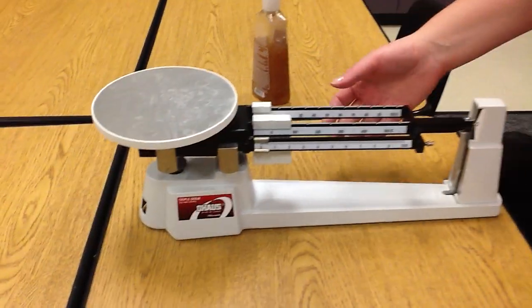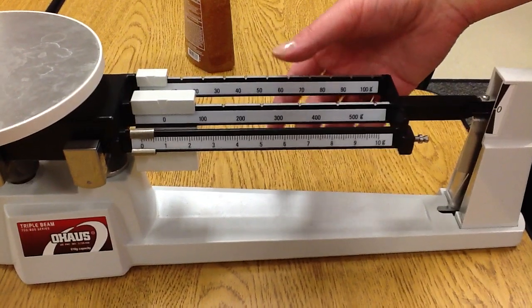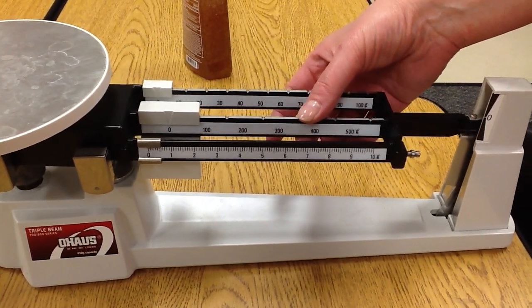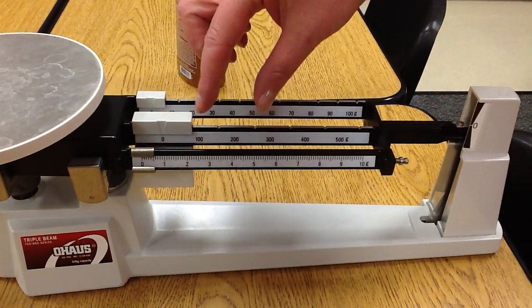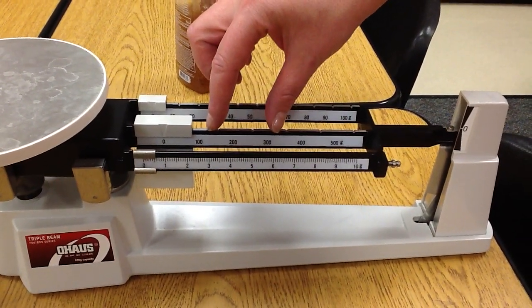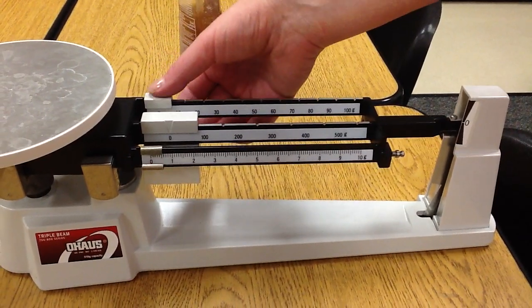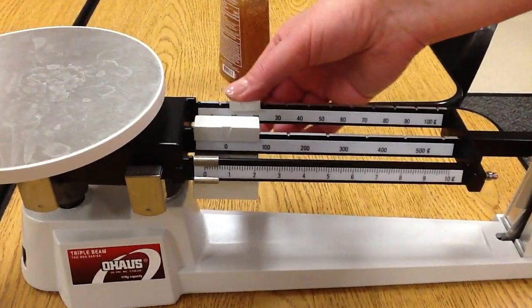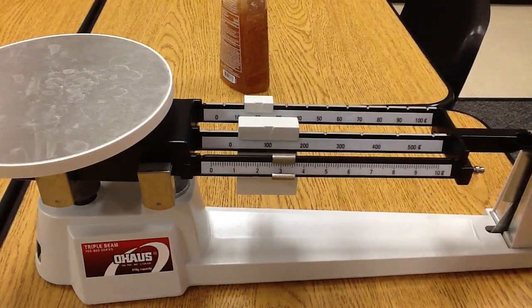The next part we have, which is very important, we have our three beams here. These are called sliders. You can see that they're in the ones, and these are grams, so one gram. We have it by 100 grams, and we have it by 10 grams. And then we have what are called the riders that you slide on the slider to help you measure.